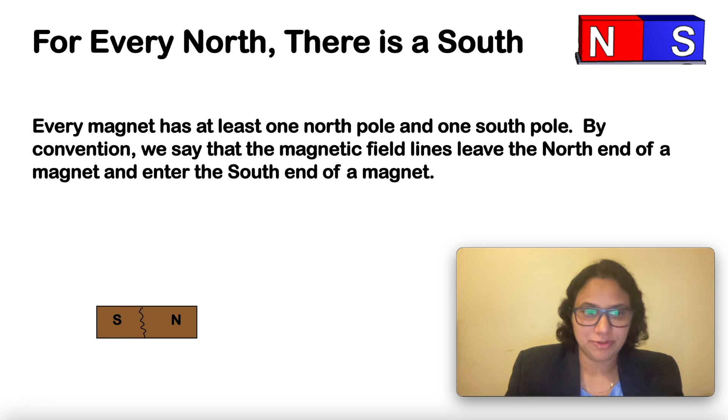What happens if you break the magnet into two pieces? Each piece will again have a north pole and a south pole. If you take one of those pieces and break it into two, each of the smaller pieces will have a north pole and a south pole.